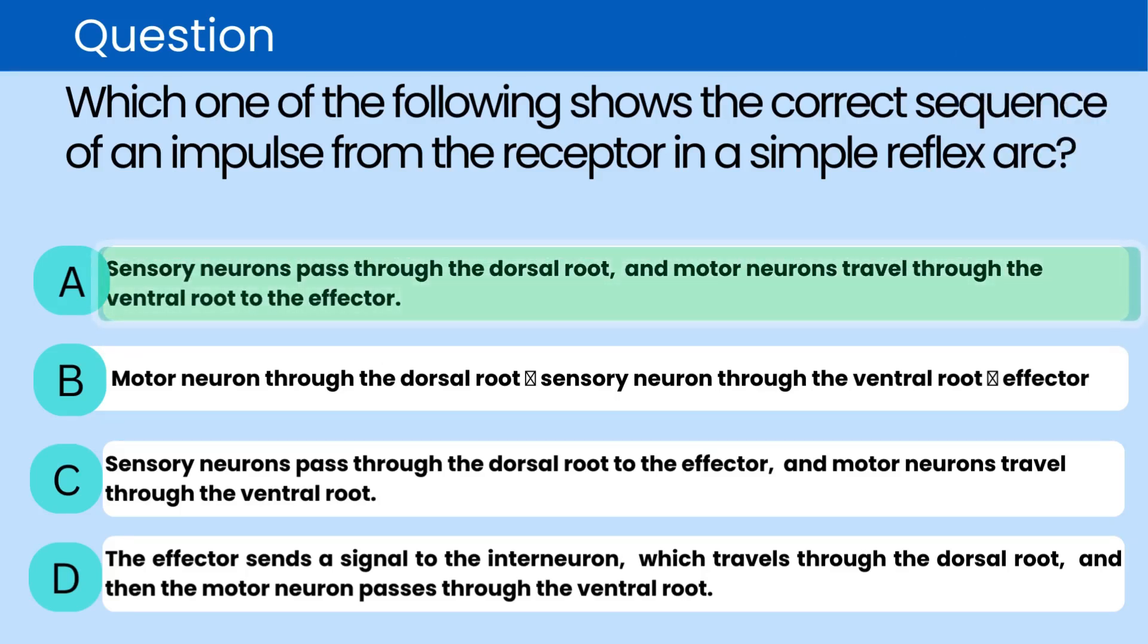The correct answer is A. In a simple reflex arc, the impulse travels from the sensory neuron through the dorsal root to the motor neuron through the ventral root and then to the effector.